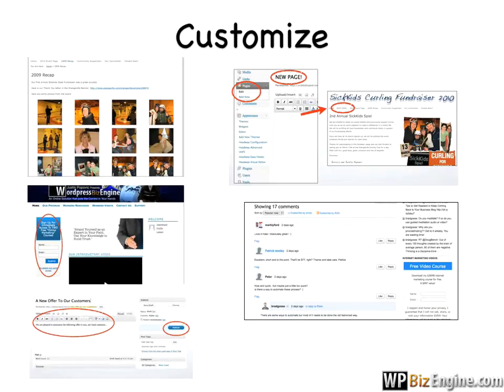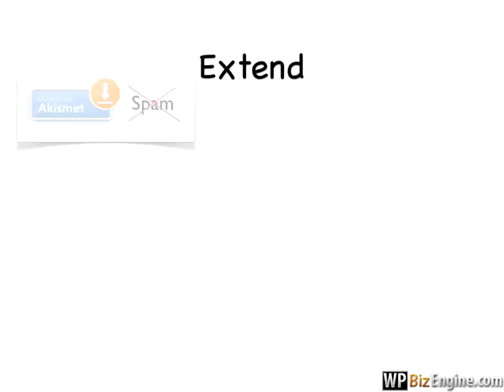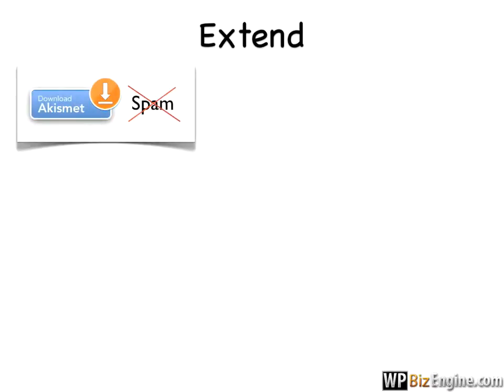That's just an introduction to some of the customization features available. What you're also going to find really powerful about WordPress is its ability to extend itself. There will be certain features that you need your website to do that you don't necessarily think of on day one. For example, a lot of business owners don't think about security. Spam is a big problem on the internet nowadays, but through WordPress plugins you can install a plugin called Akismet that blocks out spam. You literally plug it in with a click of a button and your site is protected against these threats.